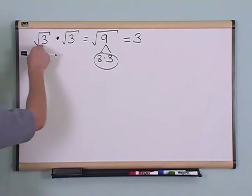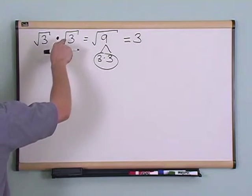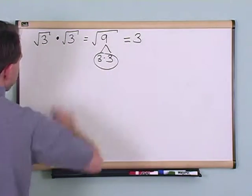If you were to go in your calculator, take the square root of 3, and take another square root of 3 and multiply them together, you would get 3.